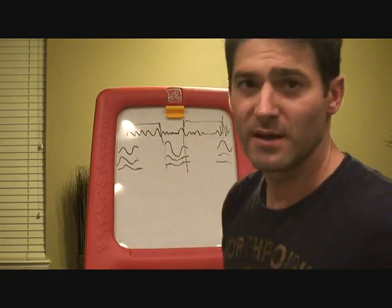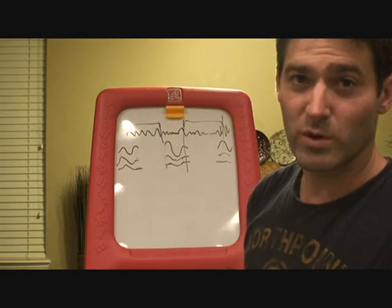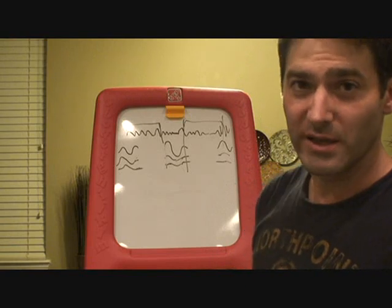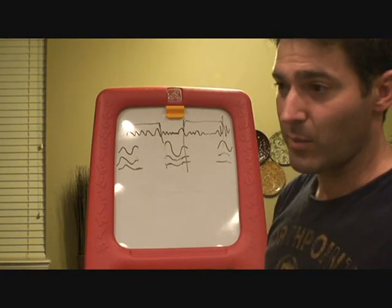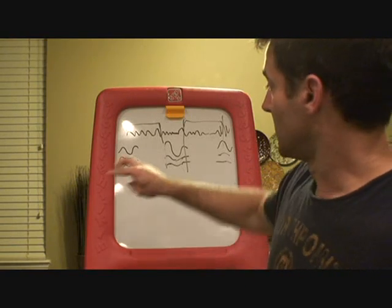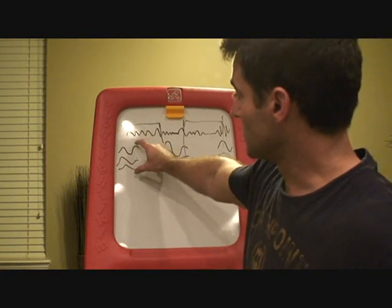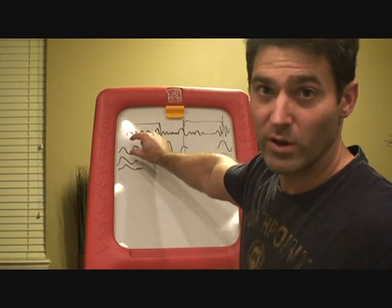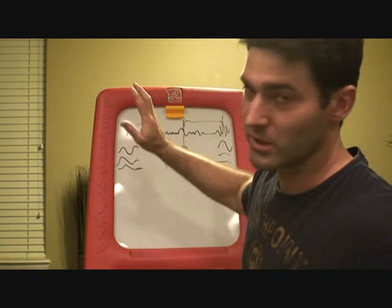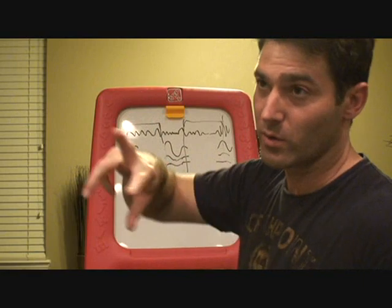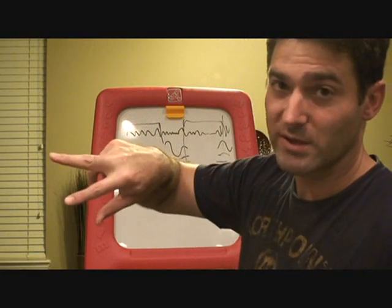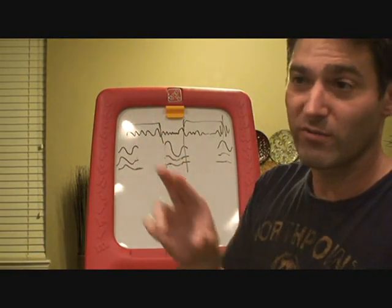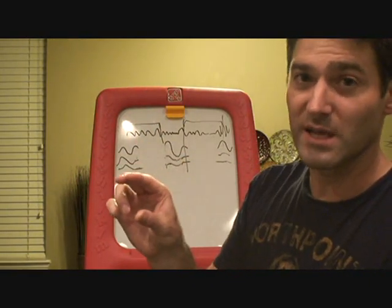Then we get into hypopnea, which would probably be the next one. Hypopnea is not a complete airflow cessation. What we use is: this is 100% of the breathing while they're asleep — actually, you establish it while they're awake — so you establish a baseline of how high it should be, and then once they fall asleep, if they fall to 50%, that's significant.